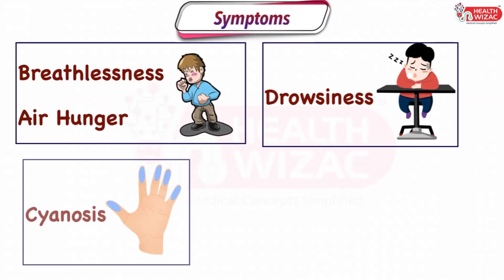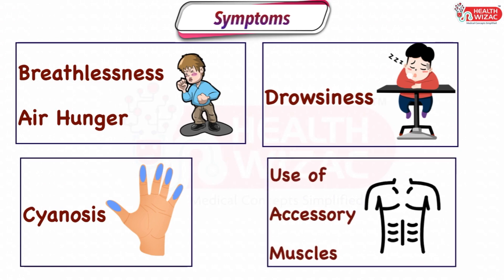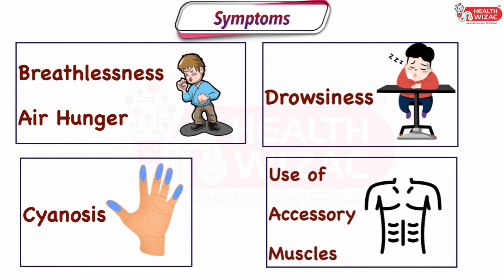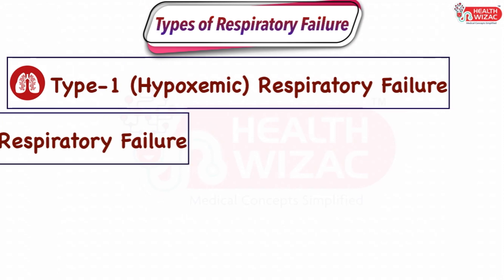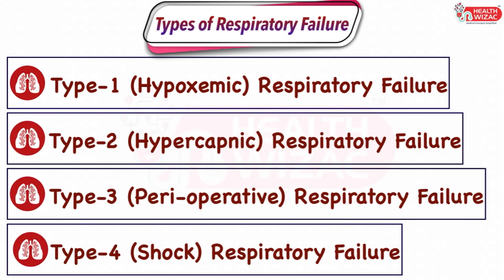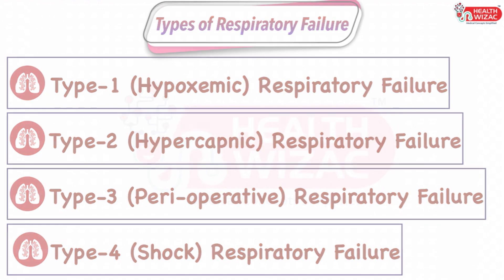It usually presents with symptoms of breathlessness or air hunger, drowsiness, cyanosis, and use of accessory muscles. Respiratory failure is primarily of four types: Type 1 or hypoxemic respiratory failure, Type 2 or hypercapnic respiratory failure, Type 3 or perioperative respiratory failure, and Type 4 or shock or reduced cardiac output respiratory failure.